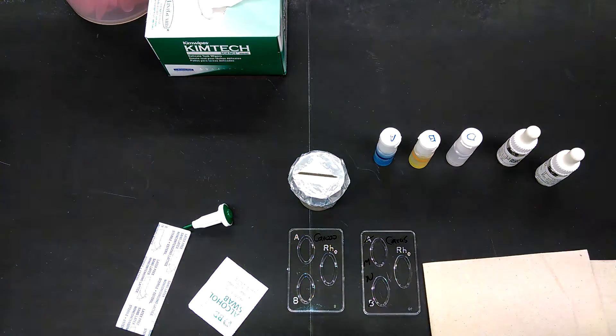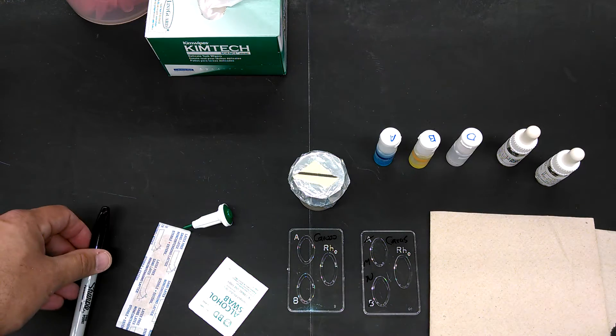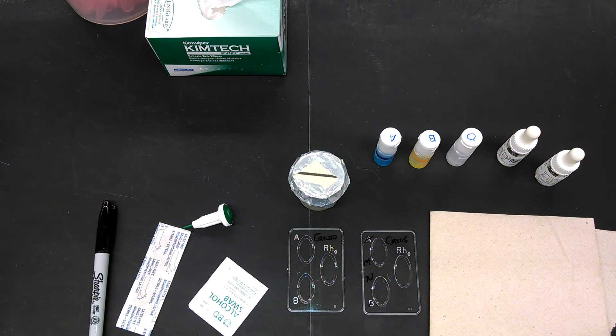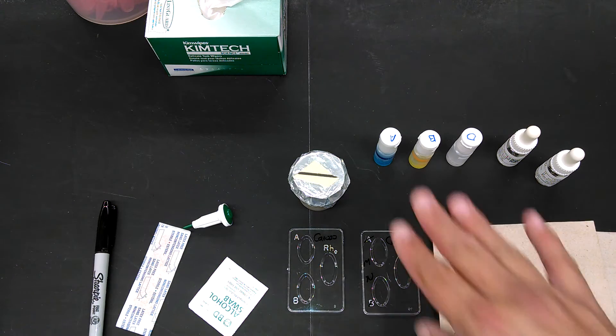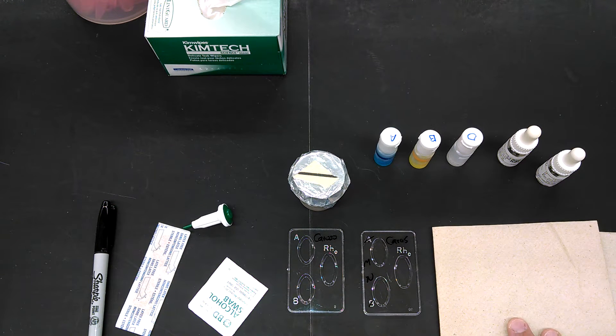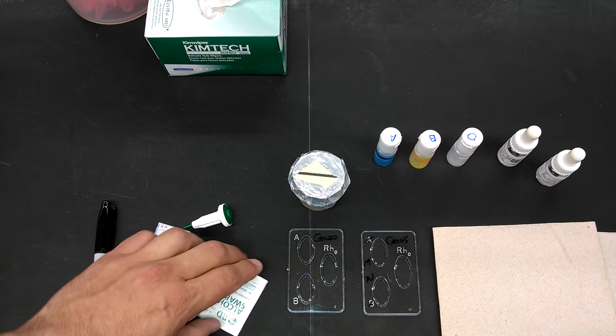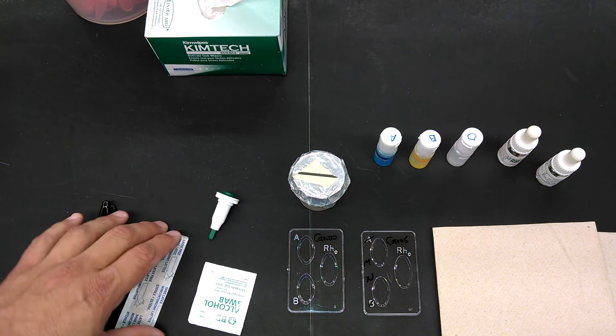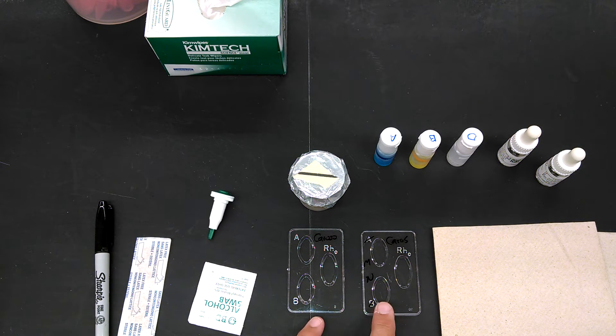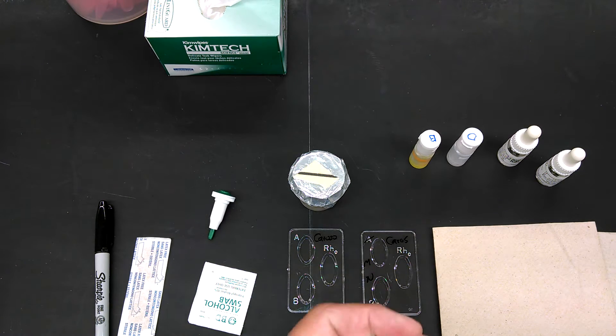You want to get everything ready because you don't want to be running around with a finger that's bleeding a little bit trying to find the things that you forgot. The antibodies are going to be up in ice buckets. They're not going to be at your table, and you should leave them there because everyone's sharing the same antibodies. The rest of it you can get and bring to your desk. Before you get started, bring your trays up to the antibodies and get them ready first.